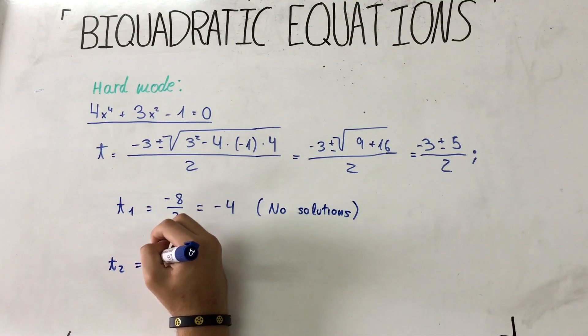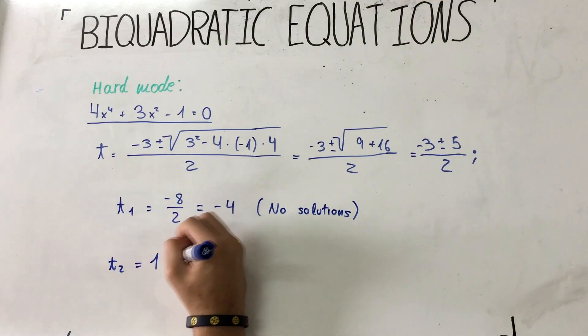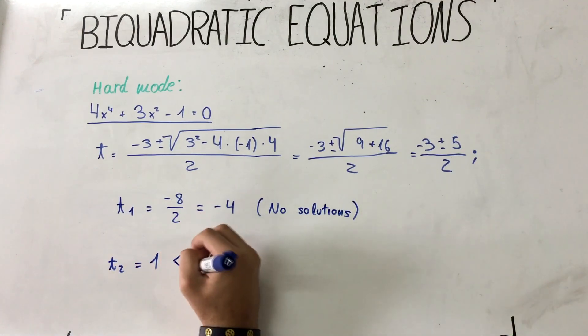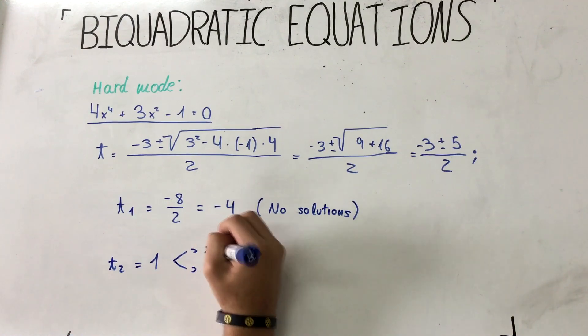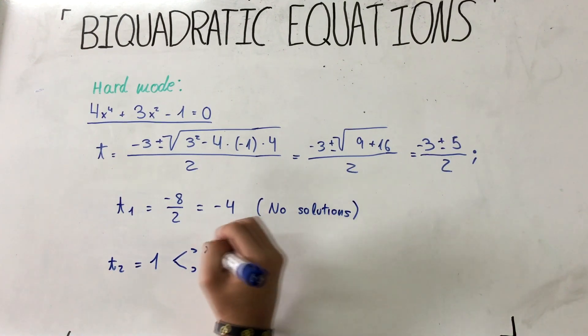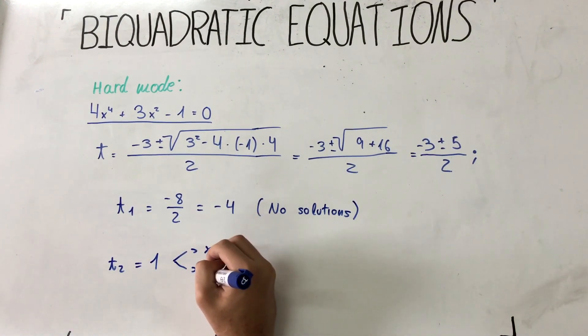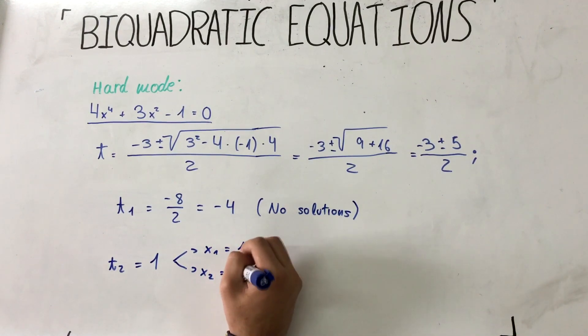So t2 equals 1, so x1 equals minus 1 and x2 equals 1.